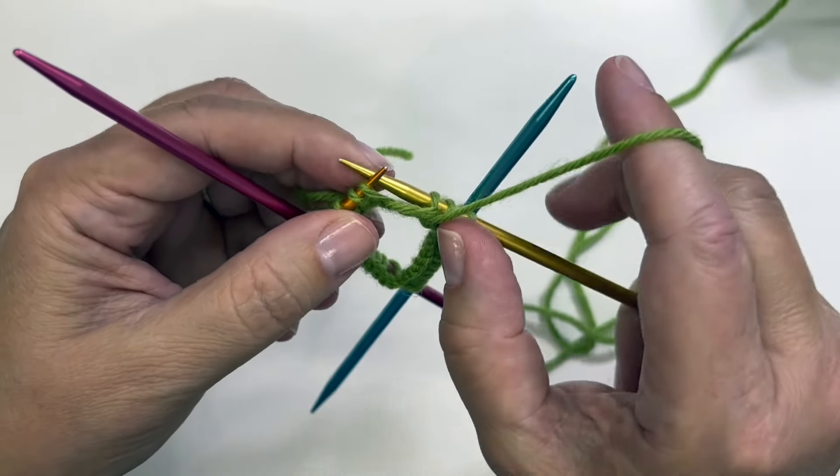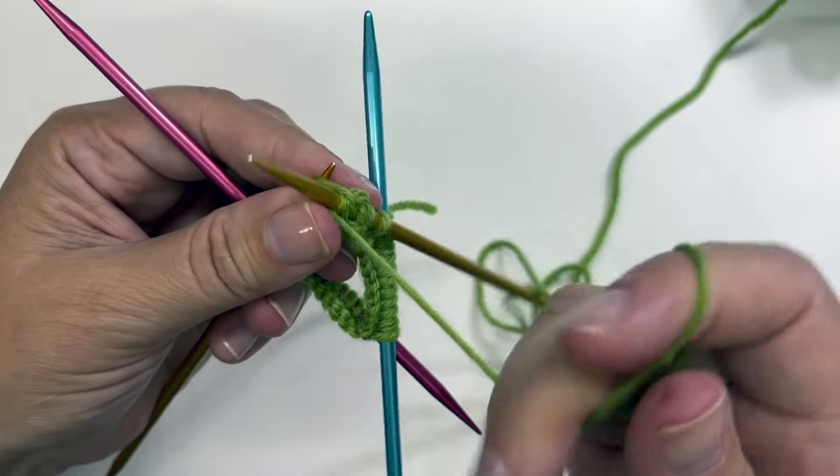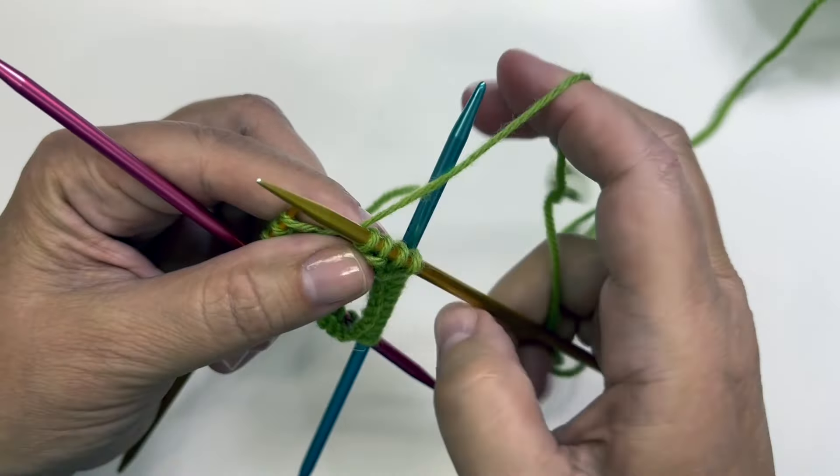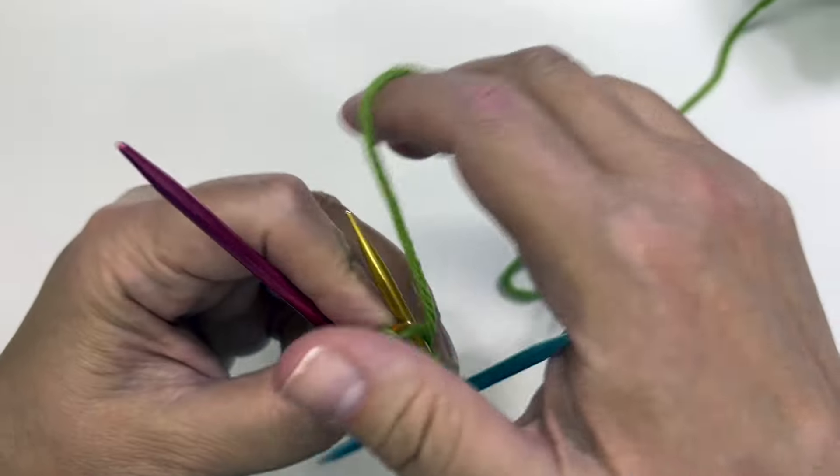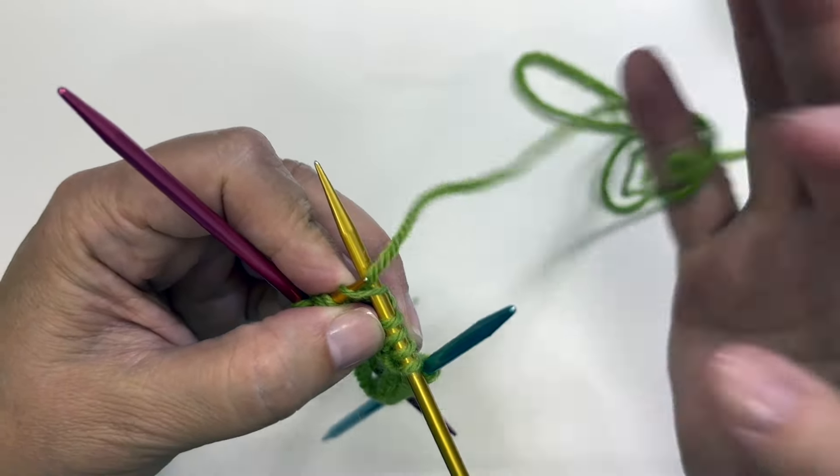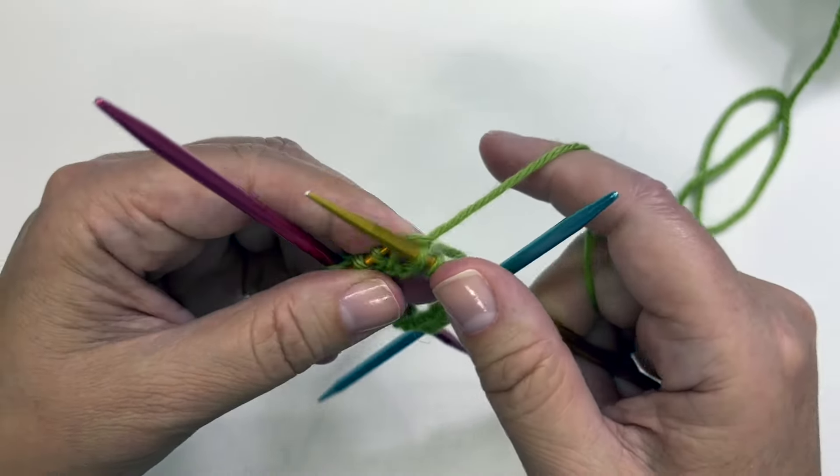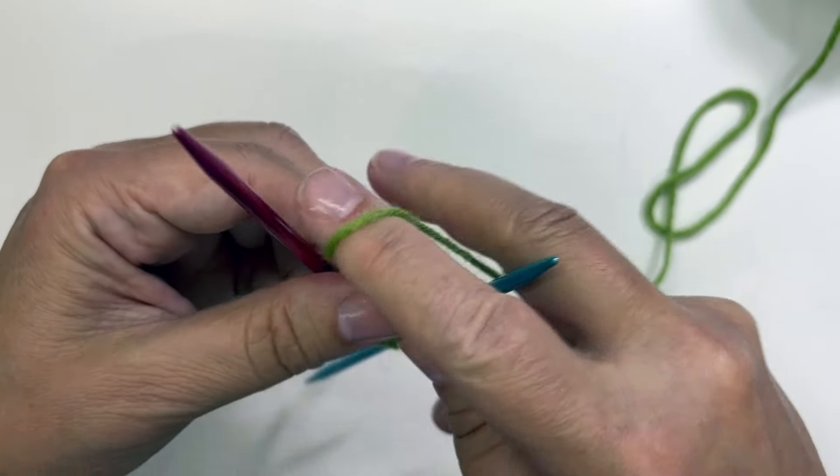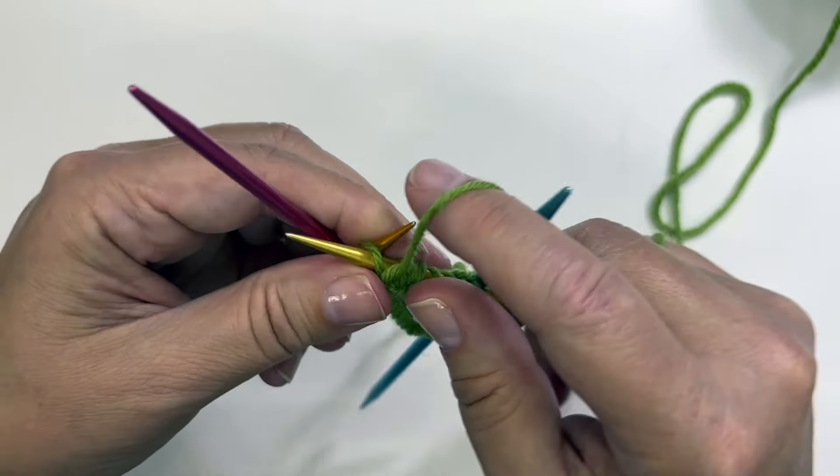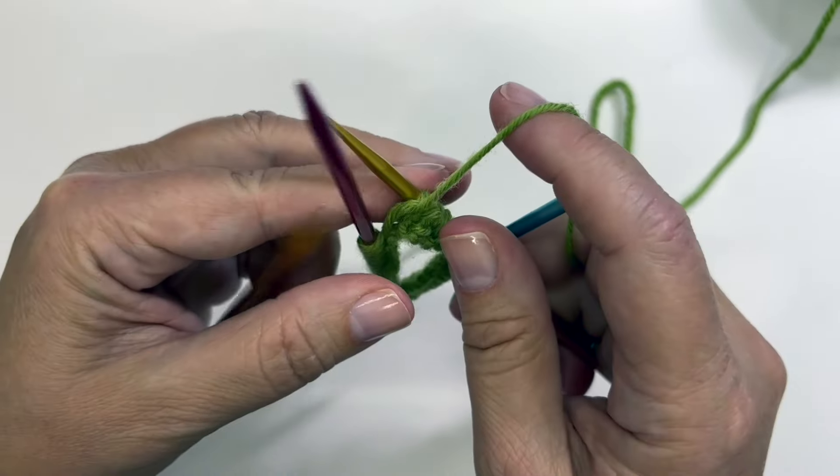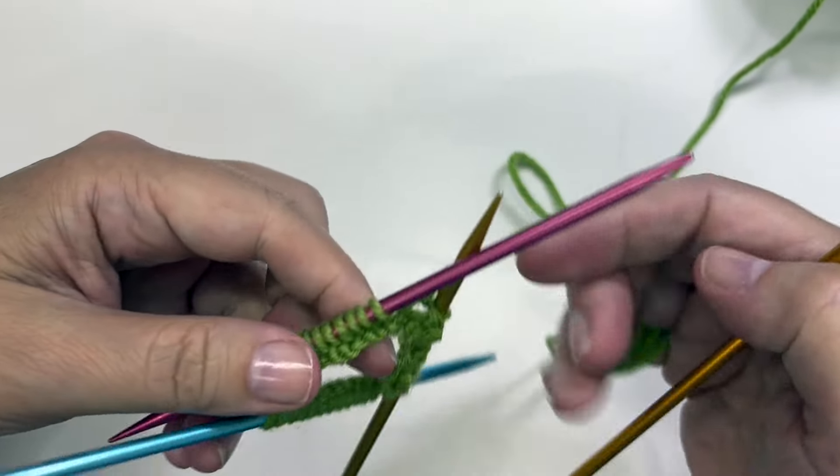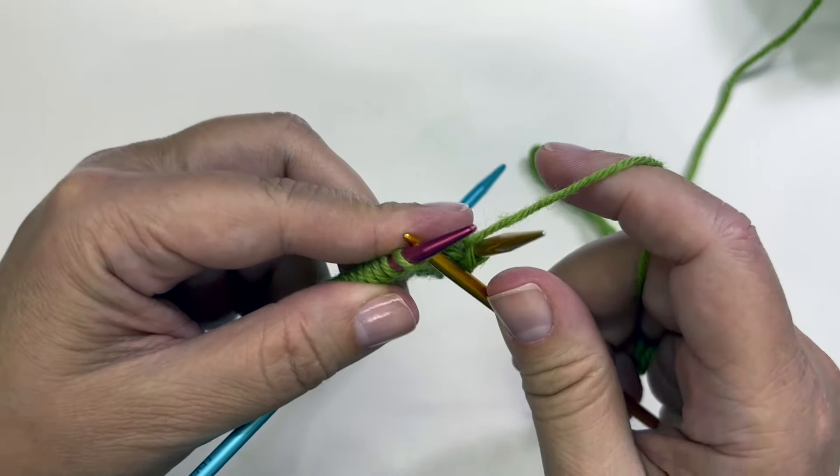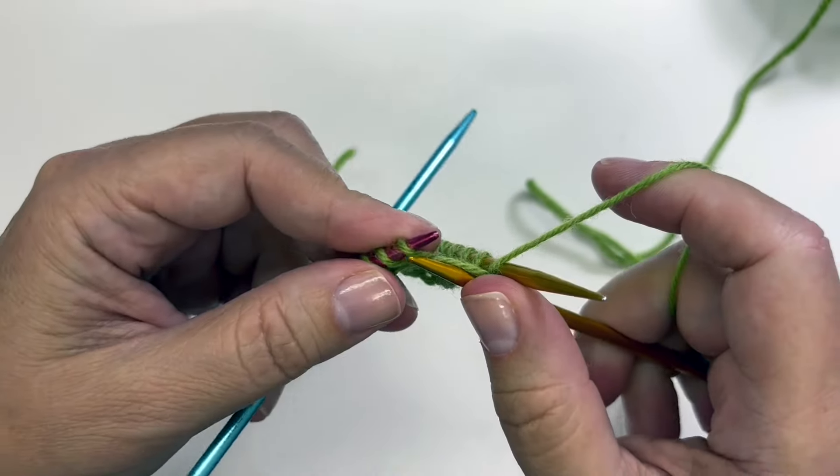So getting joined in the round: to recap, I cast all my stitches, I find the stitch that I began with, and I put that towards the pointy end of the needle. I find my empty needle and I put it into that stitch. Then I find the yarn that's attached to the ball and I knit that stitch into place.